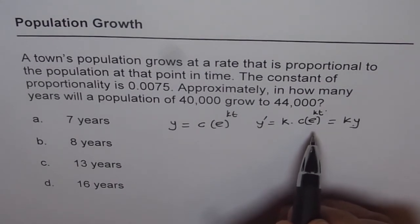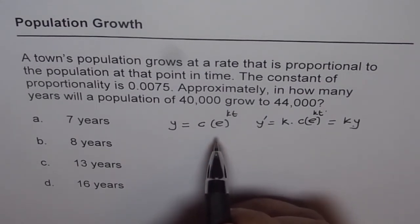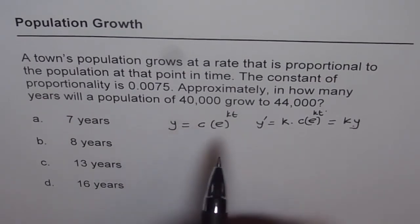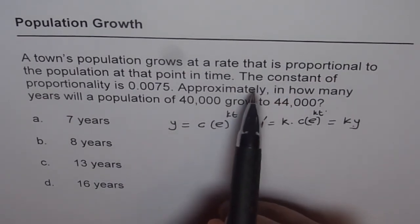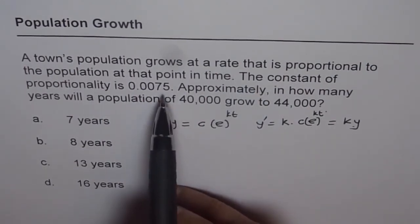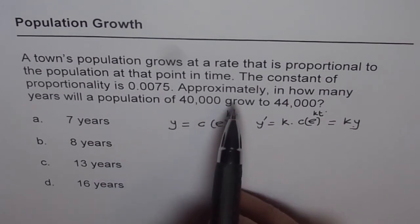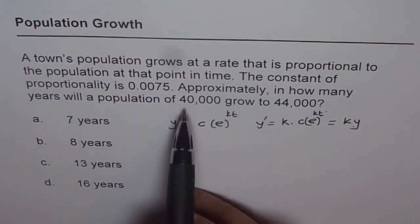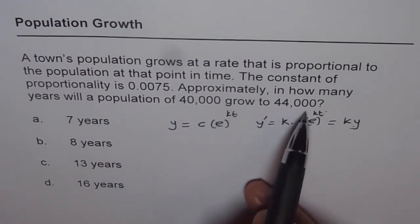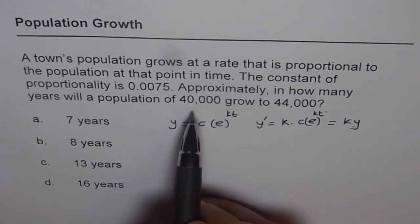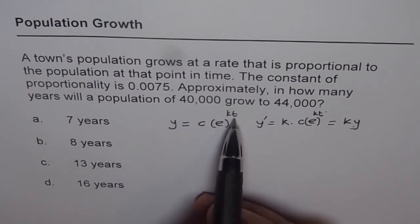Now let's find the equation of this function first, and then we will find the derivative. The constant of proportionality is 0.0075. That means k is 0.0075. Approximately in how many years will the population of 40,000 grow to 44,000? So we are given the values c and y. Let's place these values and find t.